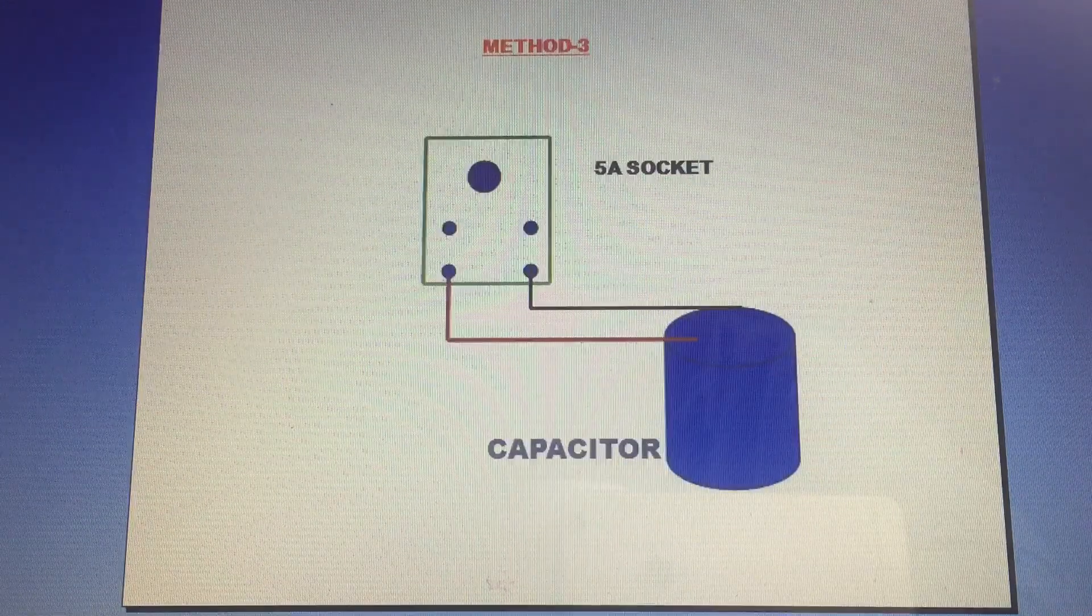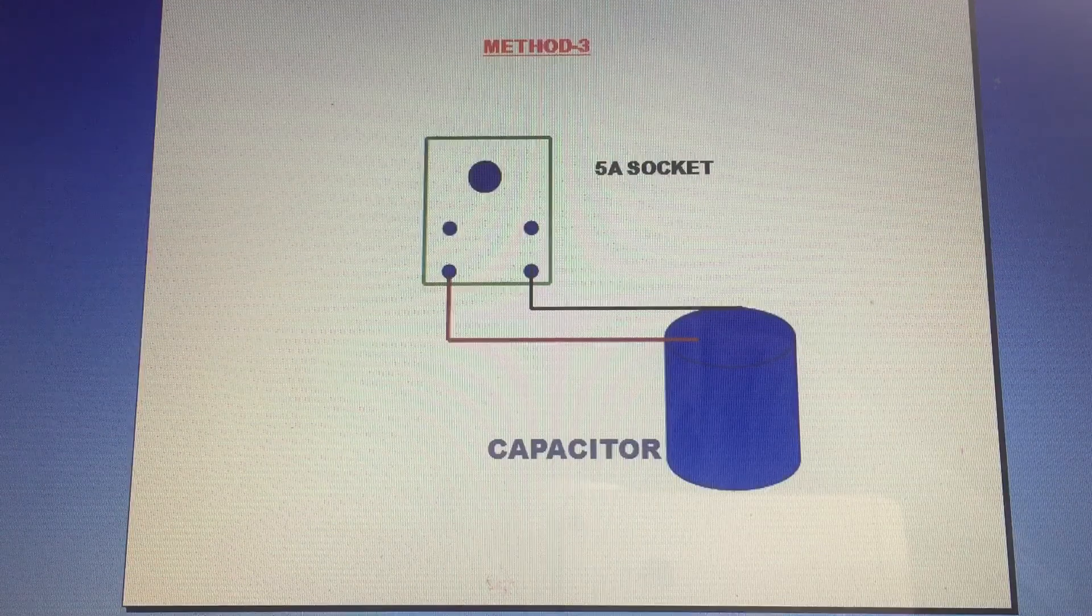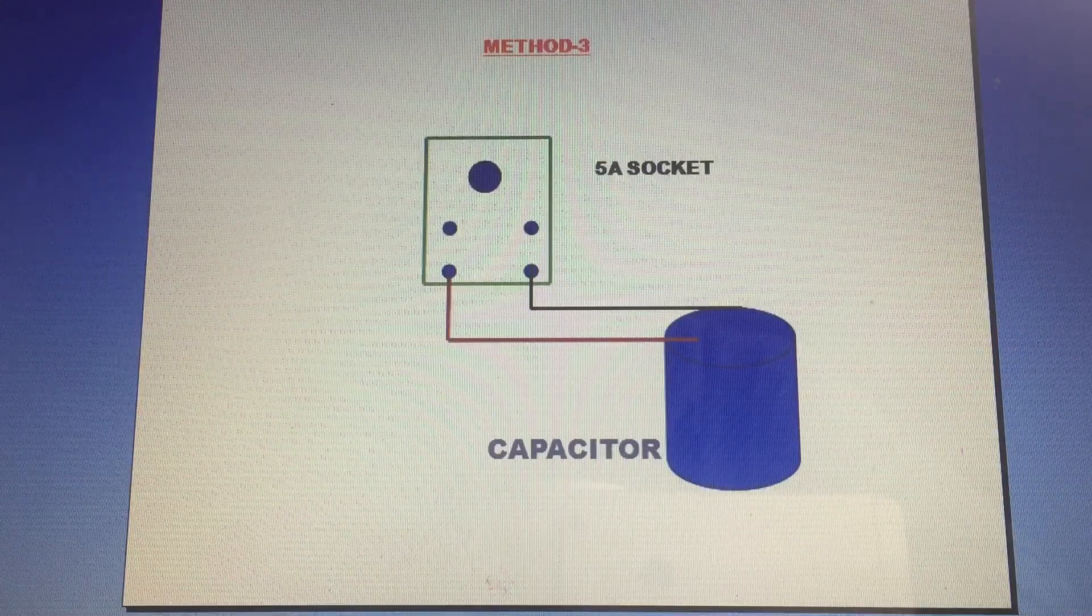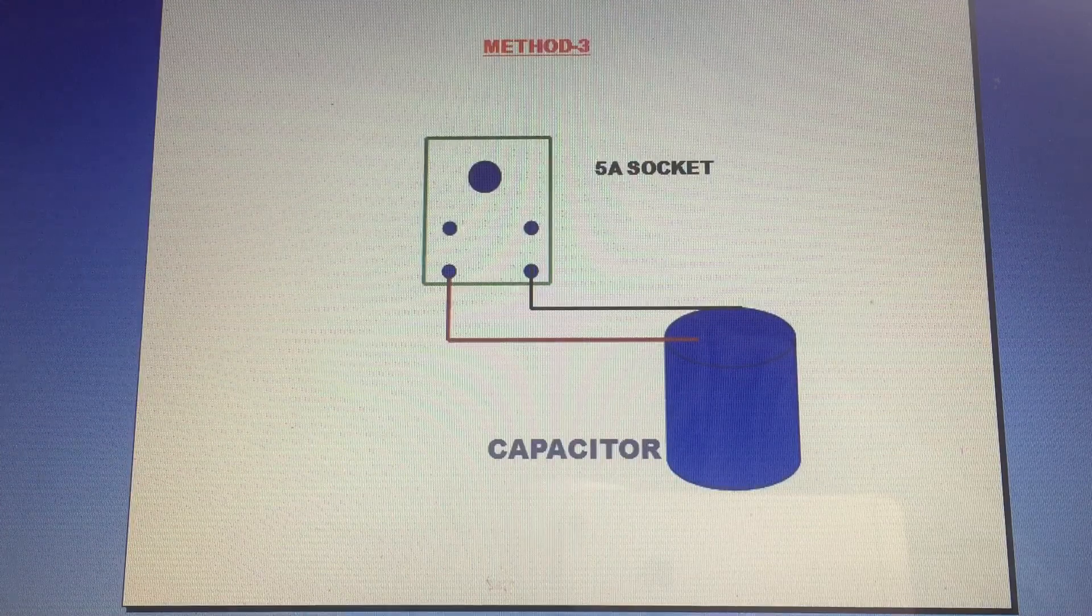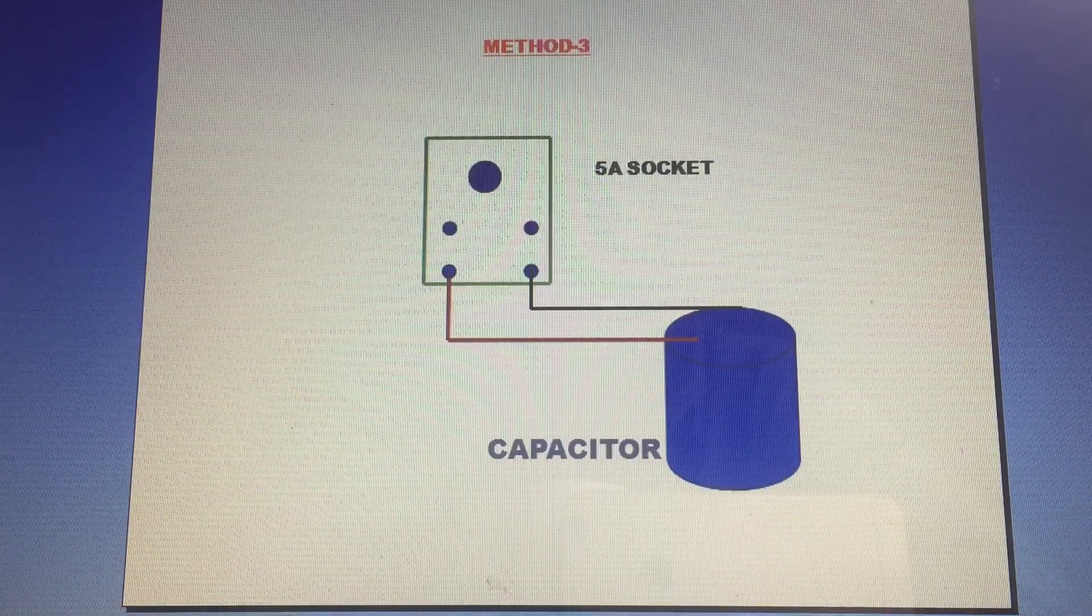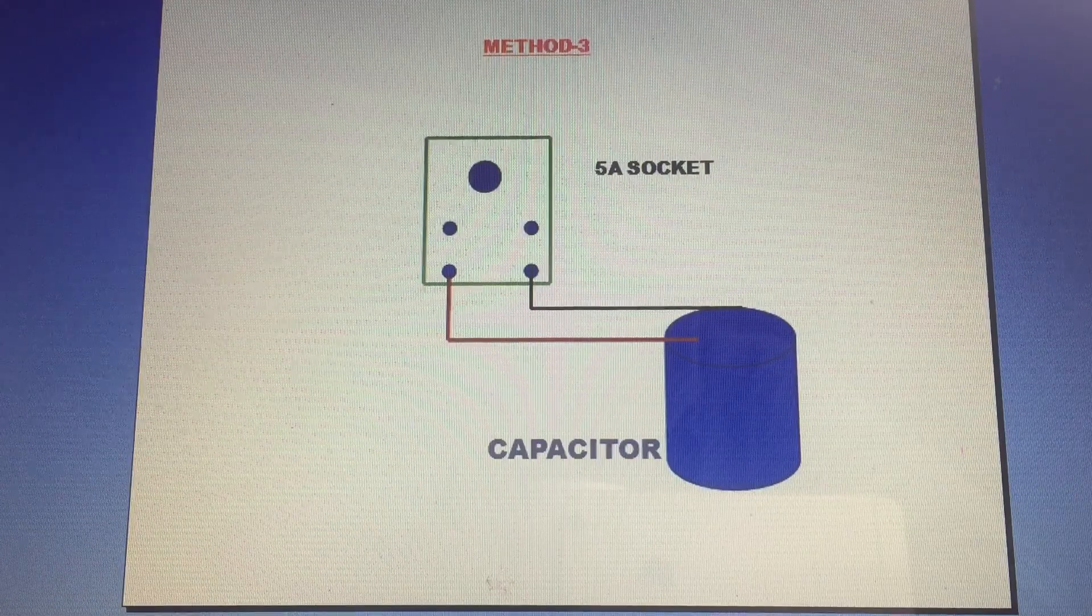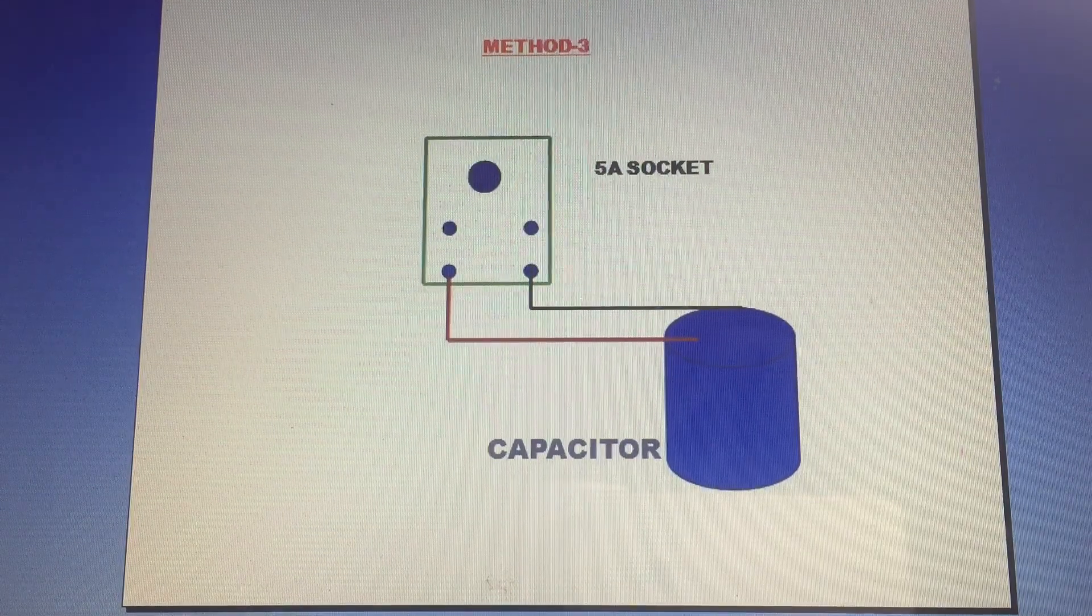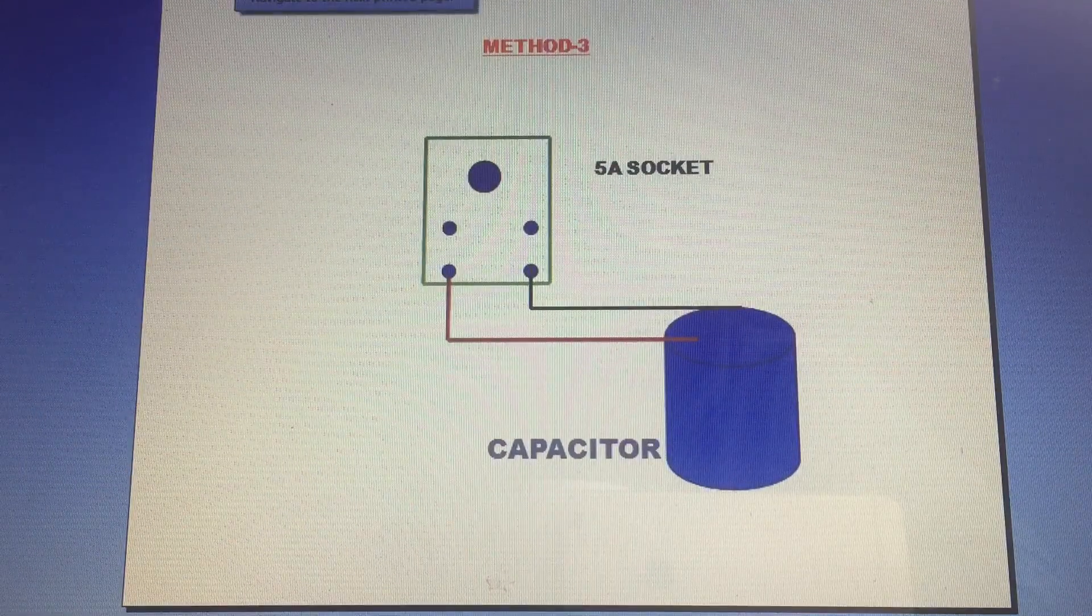Method 3: If you have the power factor capacitor, there is a 5-amp socket. You can connect with a 5-amp socket. In the 5-amp socket, connect the capacitor to phase neutral and plug it in. This will connect the power factor capacitor automatically.